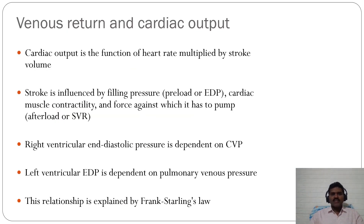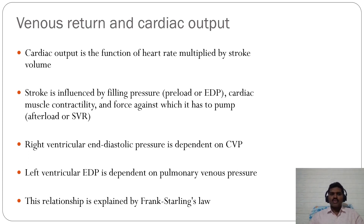Let's look at the relationship between venous return and cardiac output. Cardiac output is heart rate multiplied by stroke volume. Stroke volume is influenced by filling pressures — that is preload, specifically the end-diastolic pressure of the right ventricle — cardiac muscle contractility, and afterload, which is the systemic vascular resistance. The right ventricular end-diastolic pressure is dependent on central venous pressure, whereas left ventricular end-diastolic pressure is dependent on pulmonary venous pressure. This relationship is explained by Frank-Starling's law.